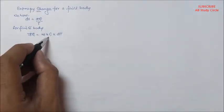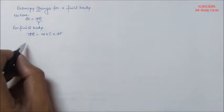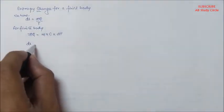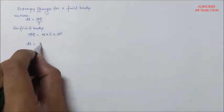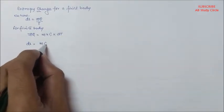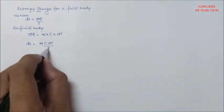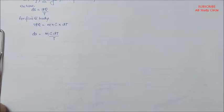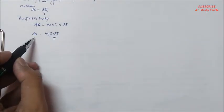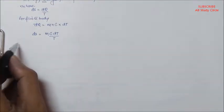So let's put this in this equation. Now, we have ds is equal to m c dt by t. Okay, let's integrate both sides.